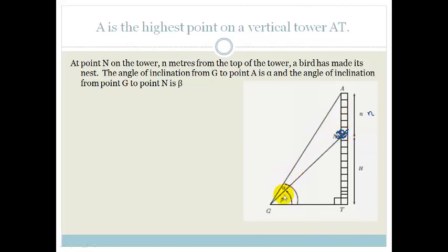The angle of inclination from G to point A is alpha, and the angle of inclination from point G to the nest, N, is beta.